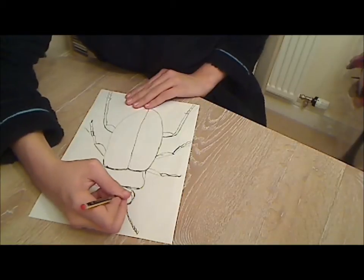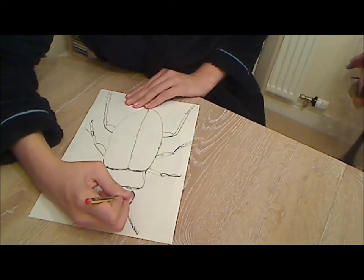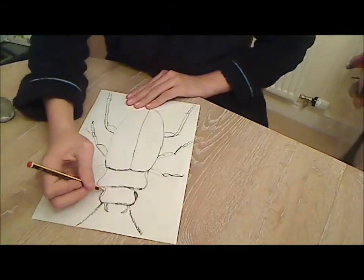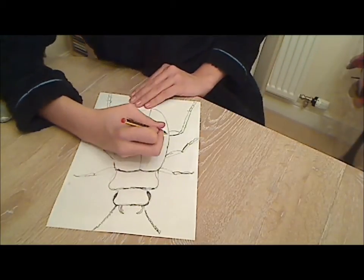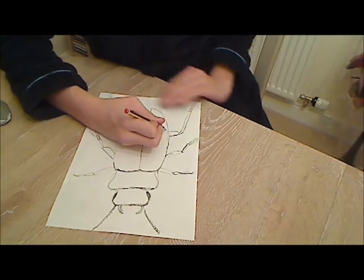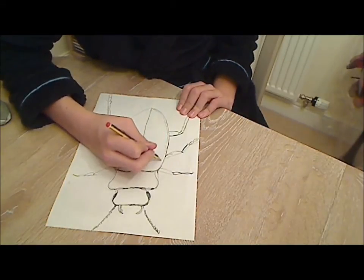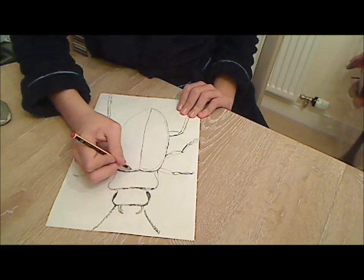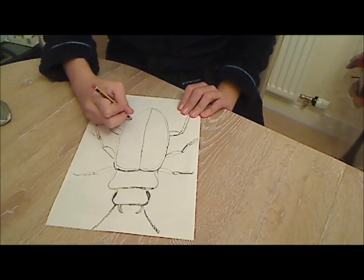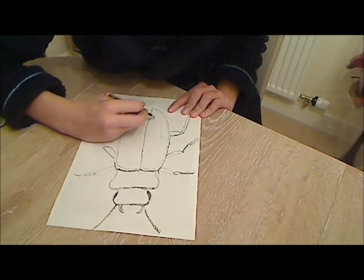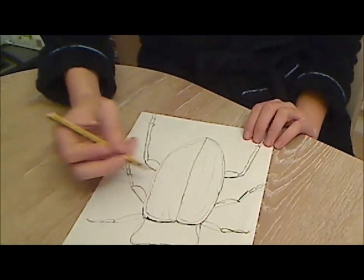Also, you want to start by drawing in the eyes. Do the same for the other. Now, add just a smaller outline to the wing protectors of the beetle. This is just to give you that shiny effect.